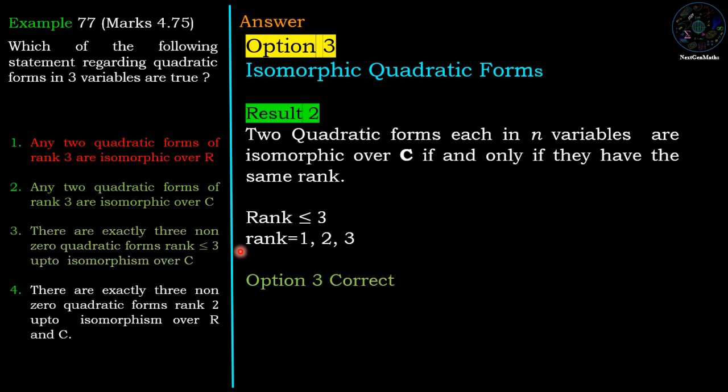Now for option 4, with a similar argument we can say it is wrong. It claims there are exactly three non-zero quadratic forms of rank 2 up to isomorphism over R and C.